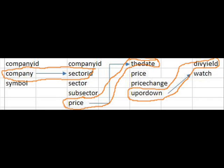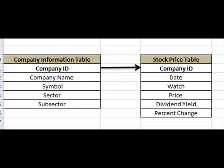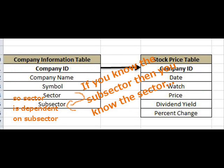None of these fields belong together: company, sector ID, price, and the date. Here's another one — company ID to company ID. But if you know the subsector, then you know the sector. So sector is dependent on the subsector.